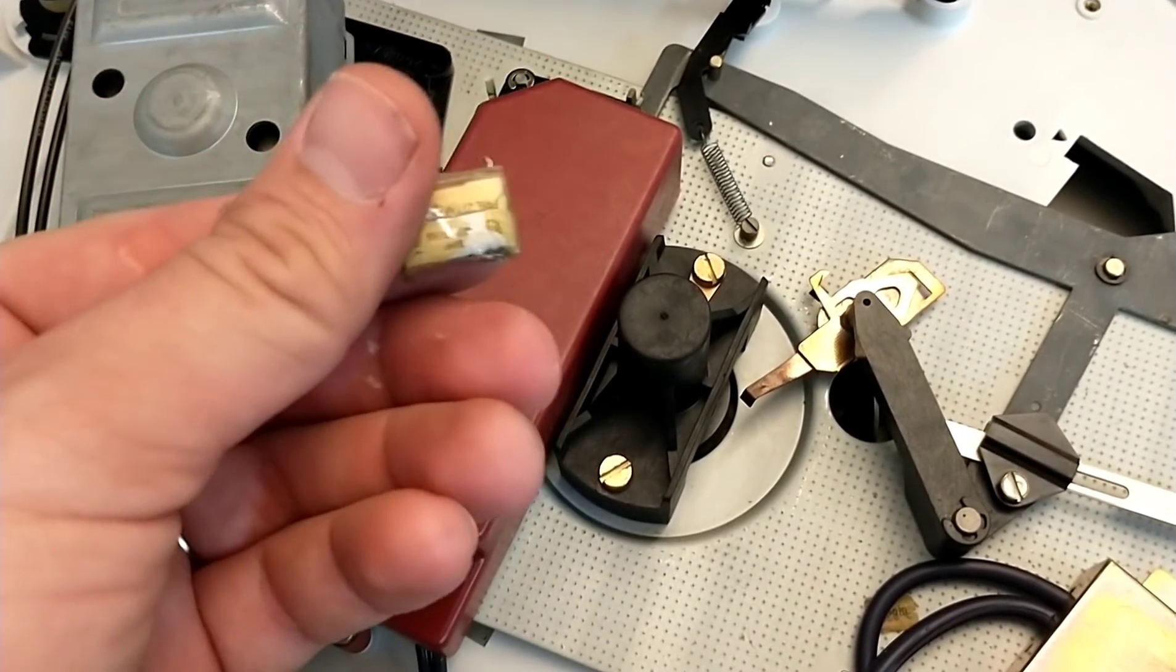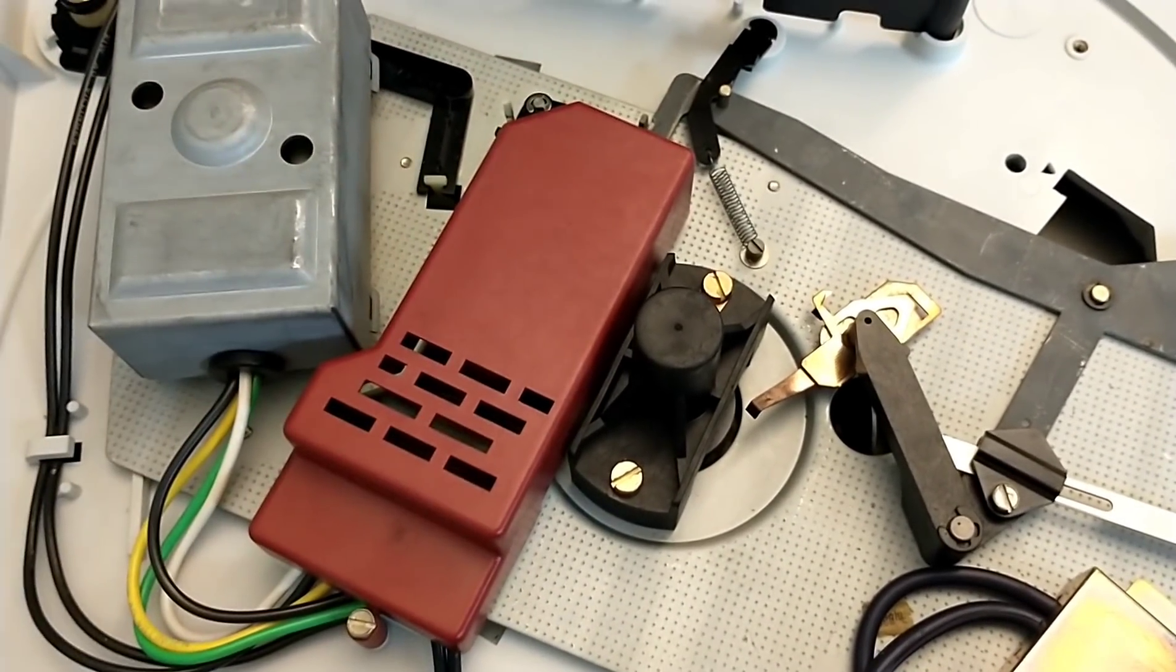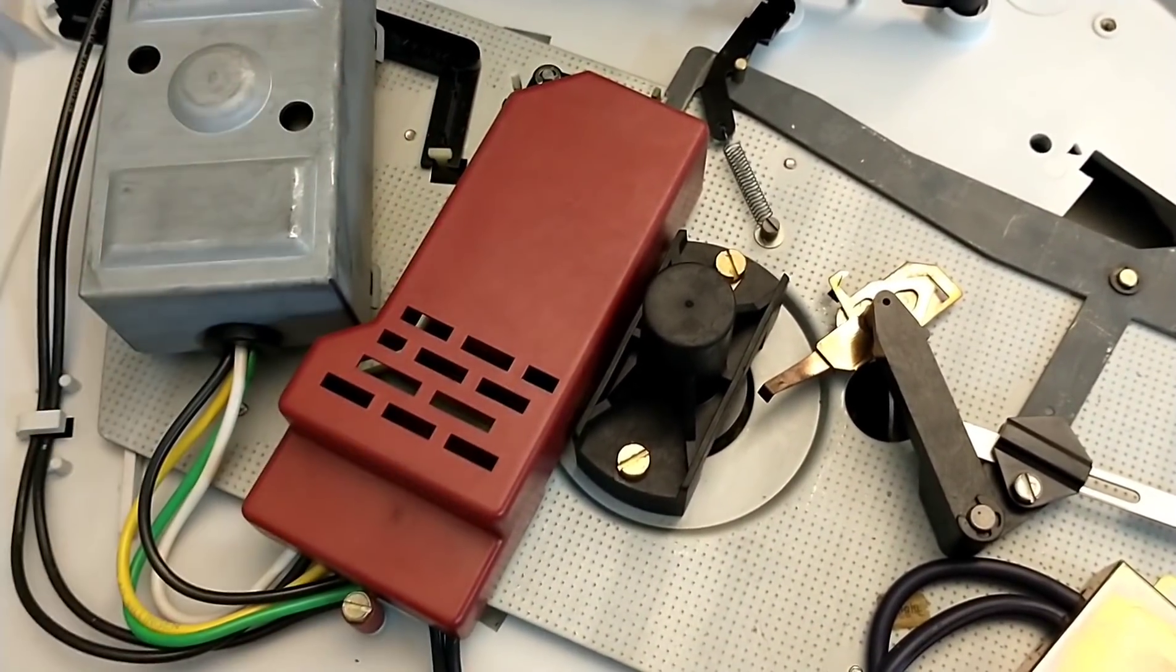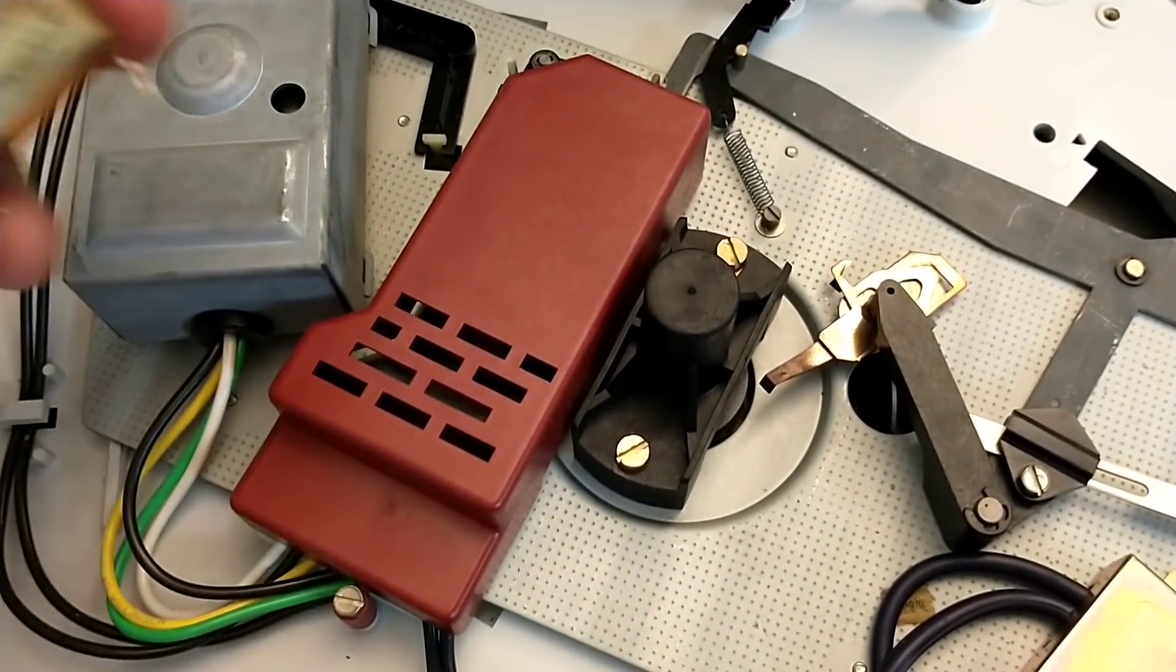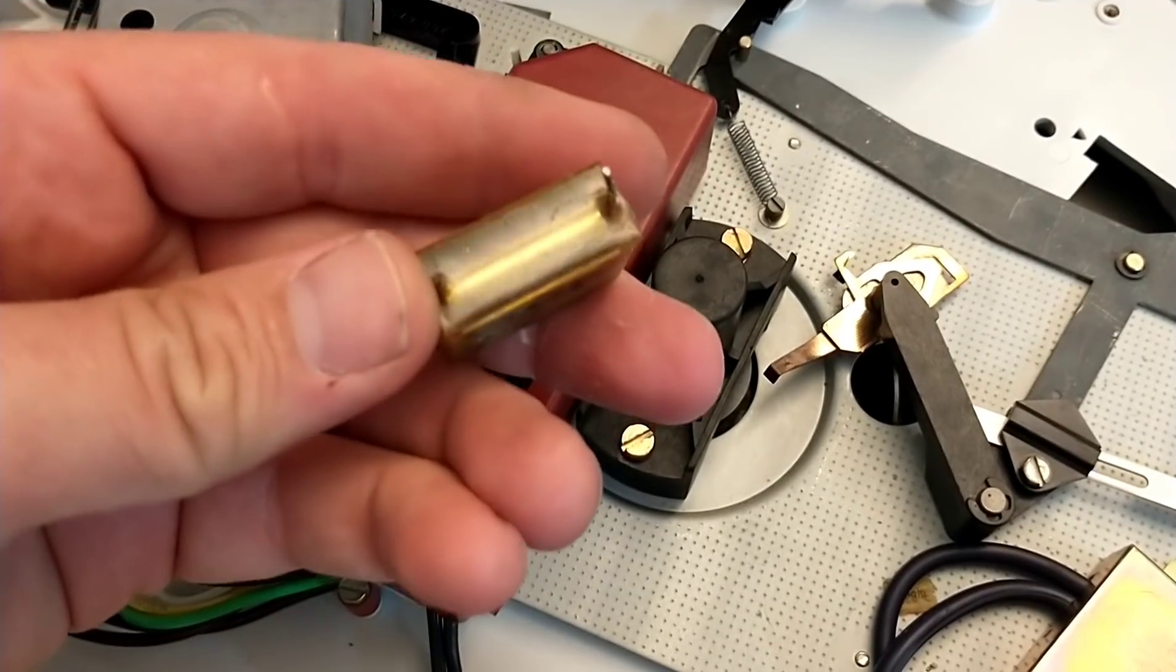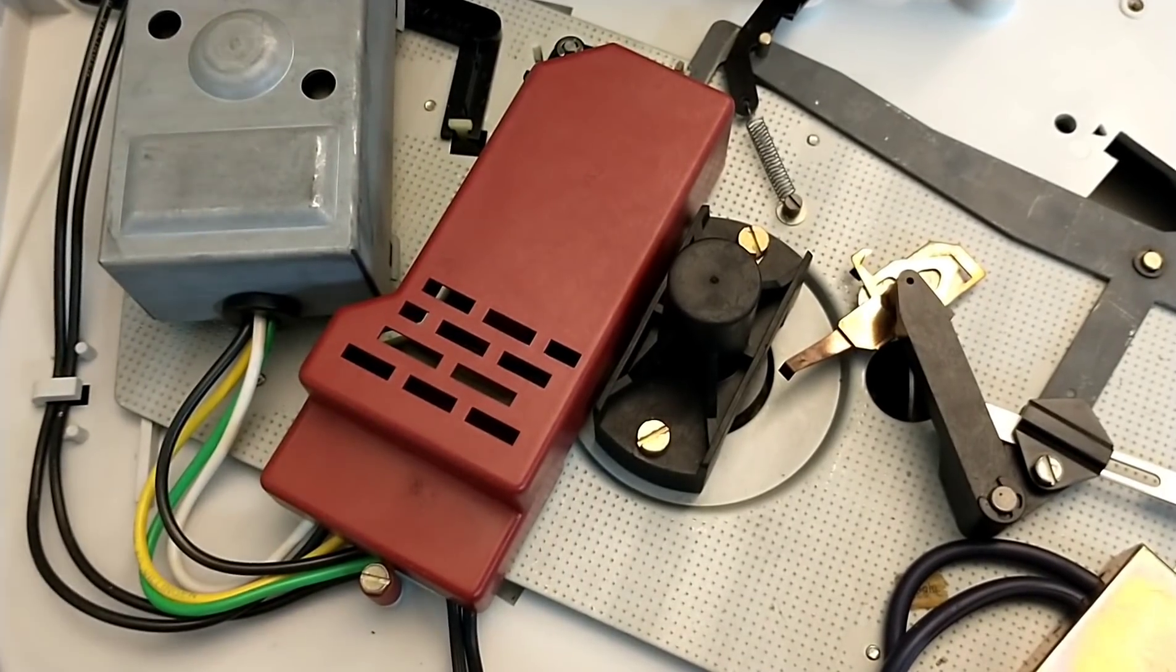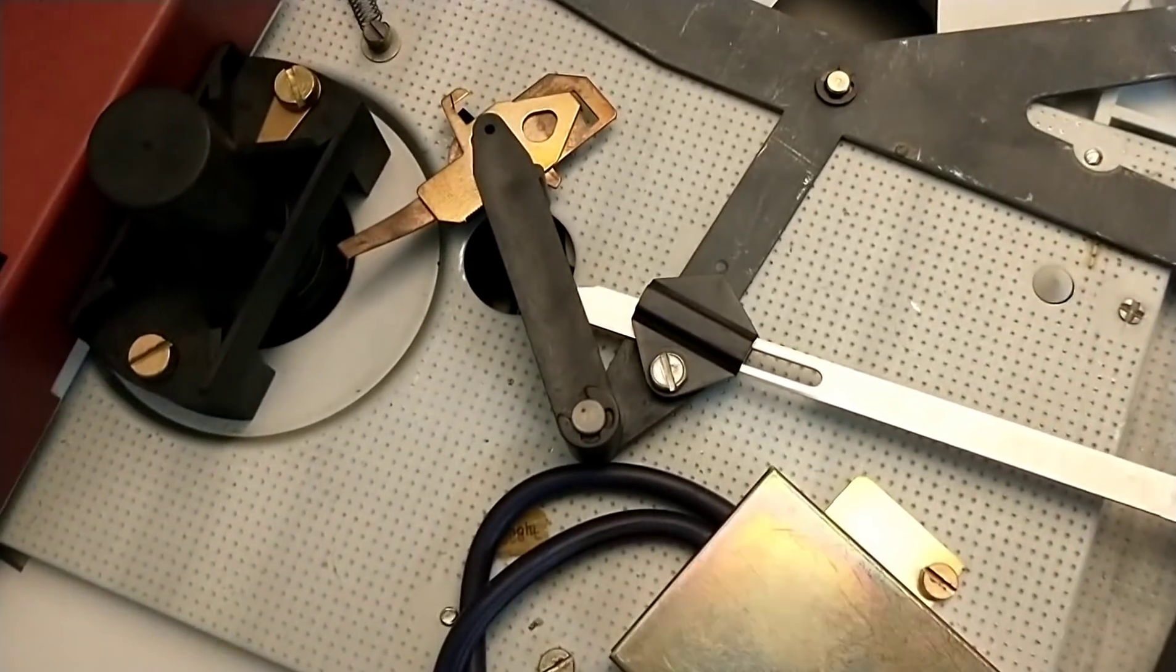These Rifa Explodomatic film capacitors. There are three values: .01, .068, and .33. And they fail. And when they fail, they short and they blow things up. So change them. But what we're focusing on here is this guy.